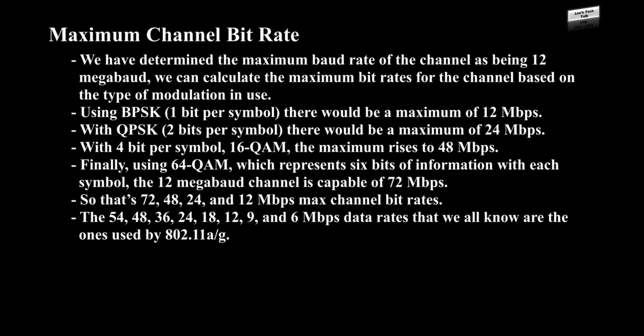Maximum channel bit rate: We have determined the maximum baud rate of the channel as 12 megabaud. We can calculate maximum bit rates based on the type of modulation in use. Using BPSK at 1 bit per symbol, there would be a maximum of 12 Mbps. With QPSK at 2 bits per symbol, there would be a maximum of 24 Mbps. With 16 QAM at 4 bits per symbol, the maximum rises to 48 Mbps. Finally, using 64 QAM, which represents 6 bits per symbol, the 12 megabaud channel is capable of 72 Mbps. So the max channel bit rates are 72, 48, 24, and 12 Mbps.